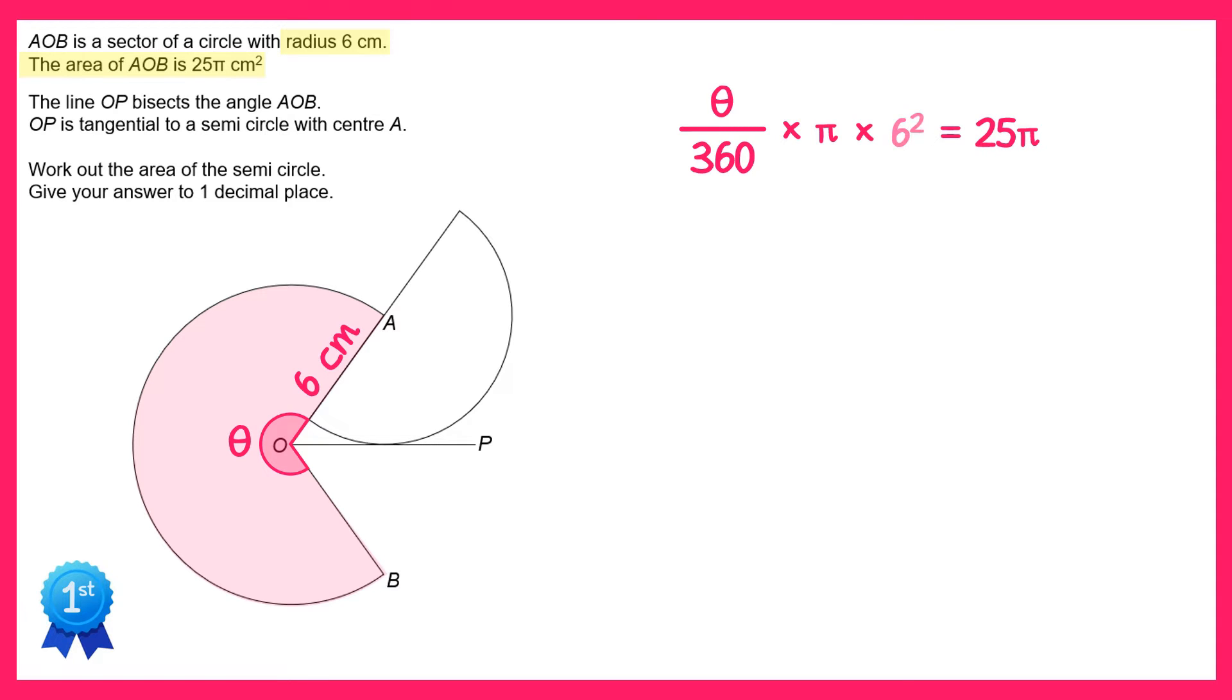We can simplify 6 squared, that's 36, and if we times this left-hand side together we get 36θ over 360 times π which equals 25π. You can now divide both sides by π so the π's will cancel out and you get 36θ over 360 equals 25.